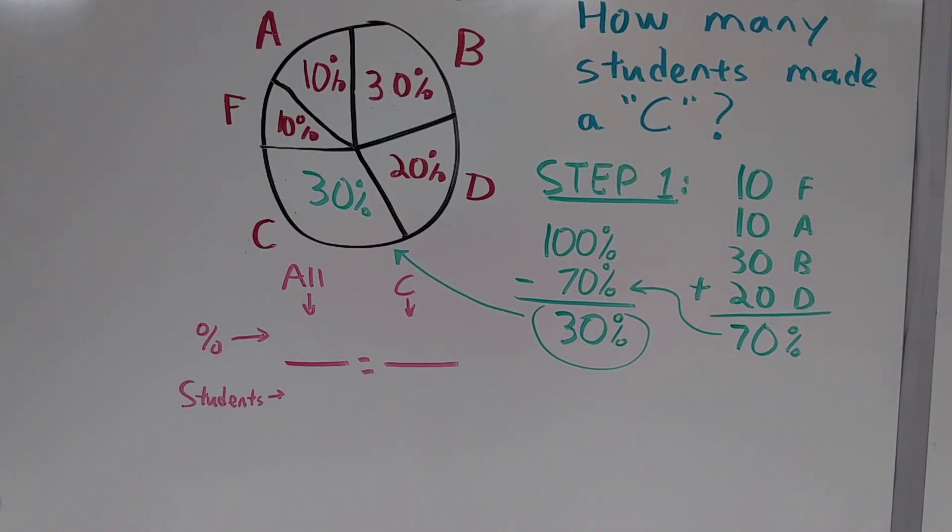Step two involves setting up a proportion. In our ratios we'll put the percentage of students on the top and the actual number of students on the bottom. Our first ratio will be for the entire class and the second ratio will be just for the students who made a C.